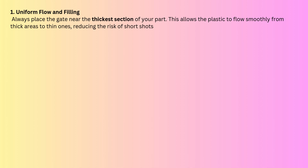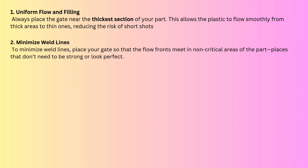The next key factor is to minimize the weld line. A weld line is a defect where two flow fronts meet at one region, forming a line. This line is unacceptable for aesthetic products. We need to choose the gate location such that the weld line forms at a non-critical or non-aesthetic surface.